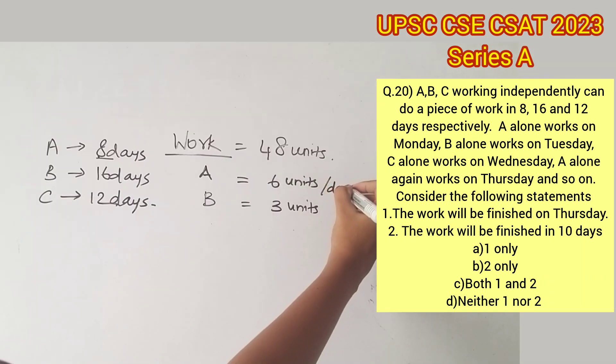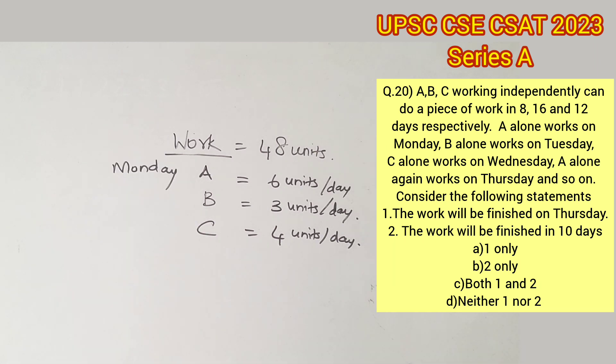Similarly for C, C takes 12 days to complete 48 units of work, which means in a day C can complete 48 by 12, that is 4 units of work.